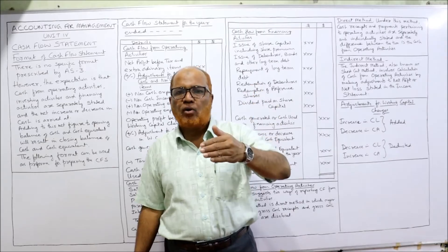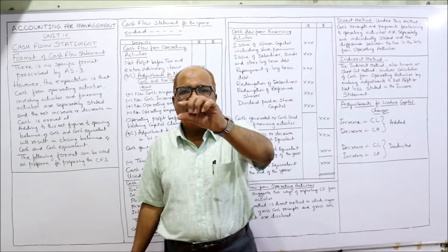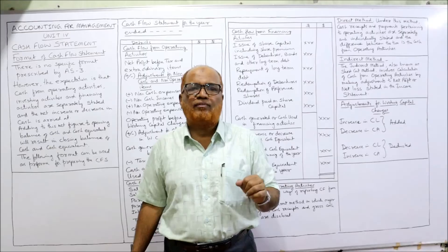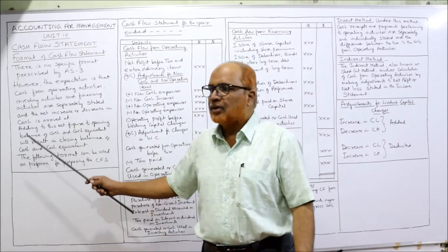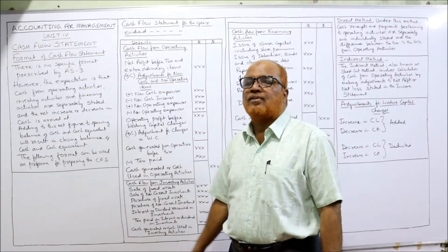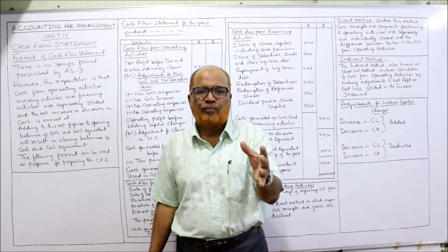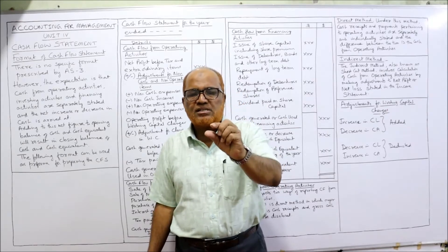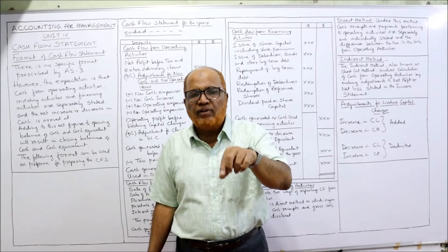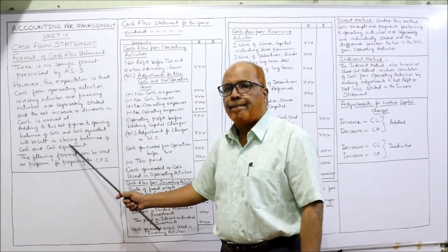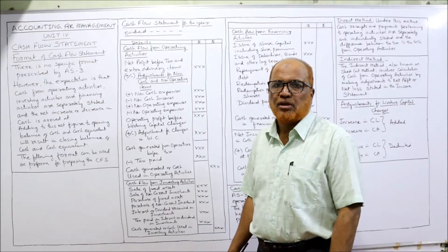In every activity, the inflow and the outflow must be shown separately, and the net amount is then calculated. For example, if inflow is 2 lakh and outflow is 1 lakh 50,000, then the net is 50,000. This net cash flow is then added to the opening balance of cash and cash equivalents to get the closing balance. The following format can be used as a proforma for preparing the cash flow statement.